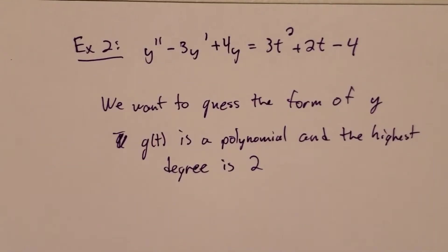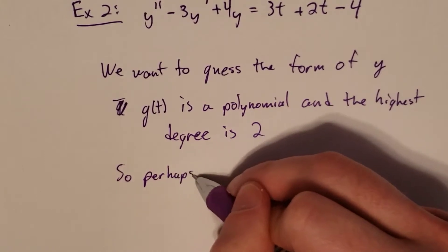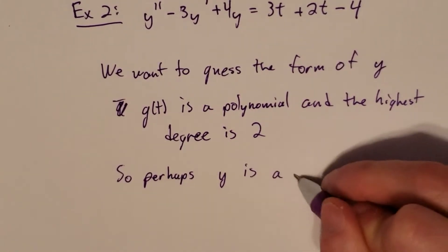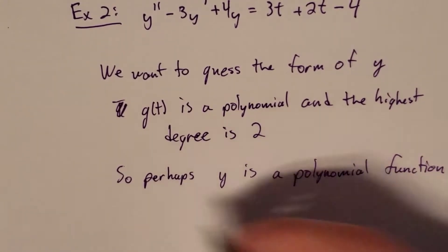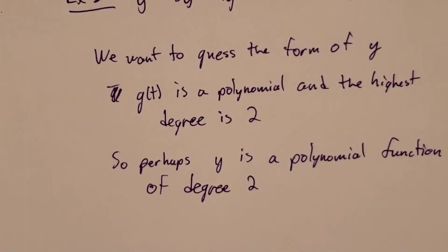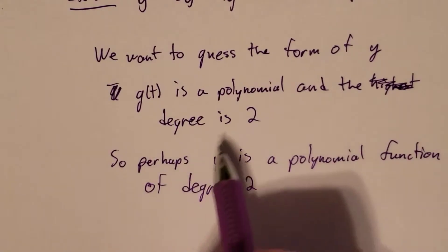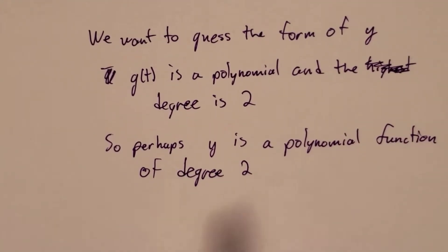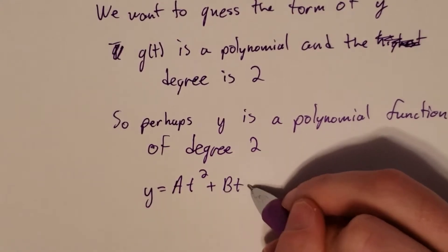So that says that perhaps we can guess that y is a polynomial function of degree 2. So let's suppose that y is equal to at squared plus bt plus c.